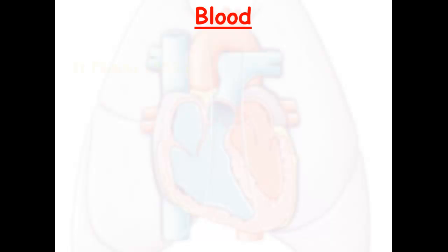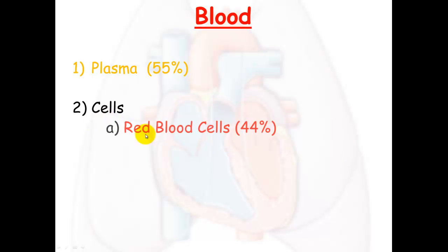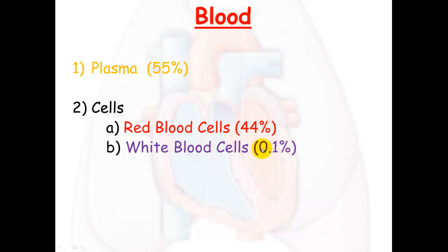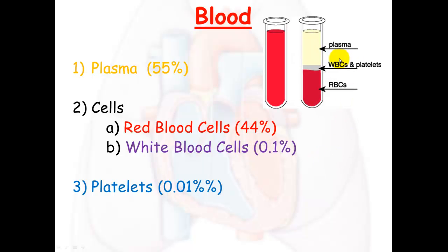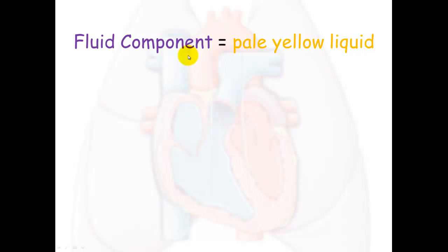Blood has three major components: plasma, which is approximately 55 percent; cells, of which there are two types — red blood cells and white blood cells; and platelets. Platelets are very small in number, red blood cells make up about 44 percent, and white blood cells are also very low in number. If you take a sample of blood and spin it very quickly, it will separate into its components, with the red blood cells — being heaviest — sinking to the bottom, and plasma — being lightest — rising to the top.